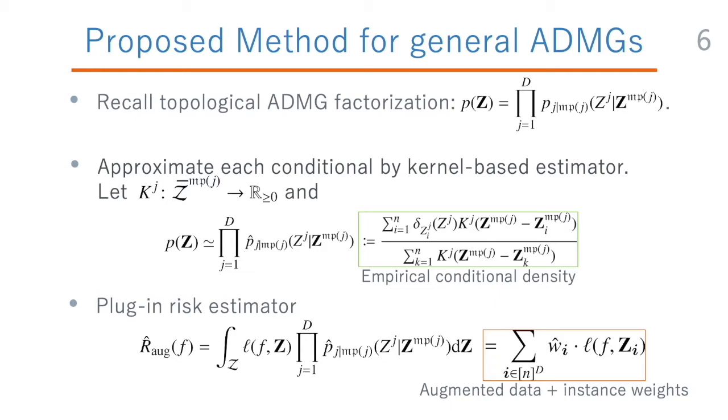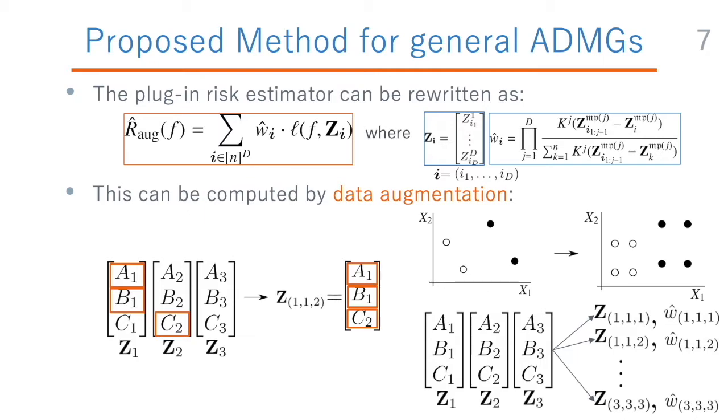Finally, we plug this approximated joint density into the definition of the risk functional to obtain a risk estimator that can be computed from the data. By recursively computing the integral while resolving Dirac's delta, this risk estimator takes the form of a weighted sum. We will explain this form in detail in the next slide. This expression, in fact, represents a data augmentation procedure.